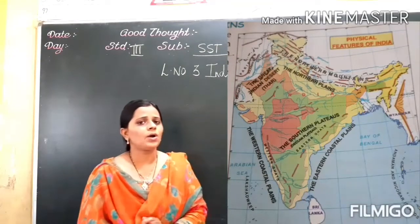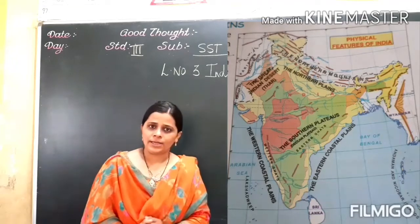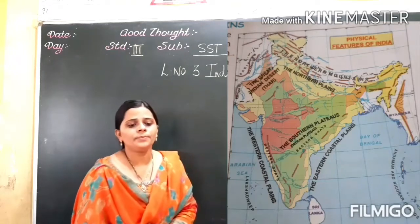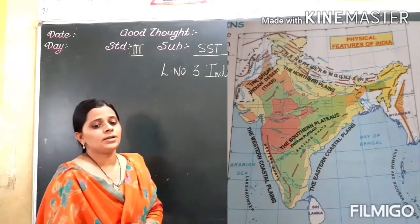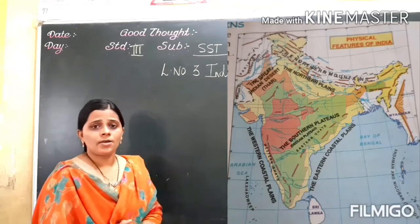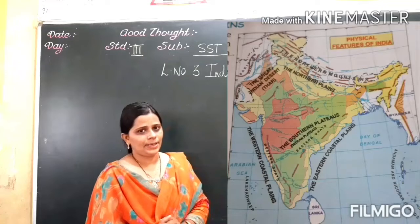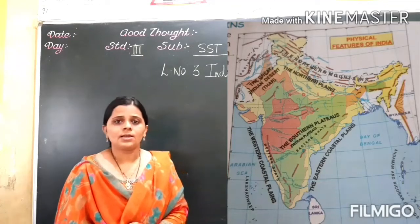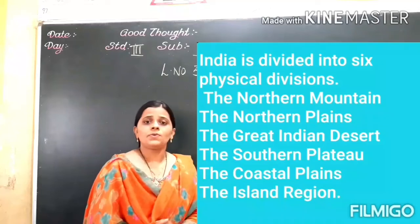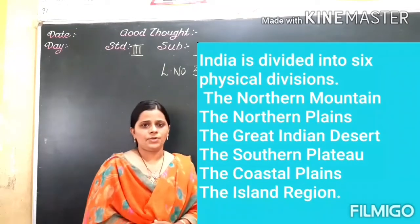Let me know which is the number 1 physical division — that is the Northern Mountain. Number 2, the Northern Plain. Number 3, the Great Indian Desert. Number 4, the Southern Plateau. Number 5, the Coastal Plain. And number 6, the Island Region. All of these we are going to discuss in the coming videos.